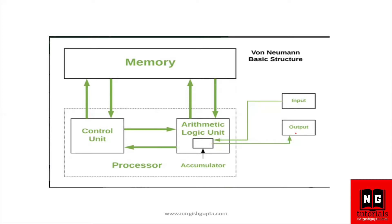The next one is input and output. As we know, computer systems understand a very specific language — the binary language. So we have peripheral devices attached with the computer system to give input or instructions, like a mouse and keyboard. These come under input devices. Output devices are those through which, once we have provided the input and calculation is done, we receive the output.